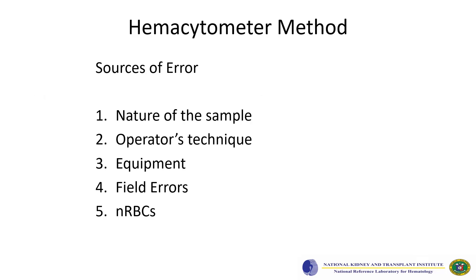The hemocytometer method comes with a lot of errors. The sources of error are: the nature of the sample, the operator's technique, the equipment, field errors, and the presence of NRBCs.